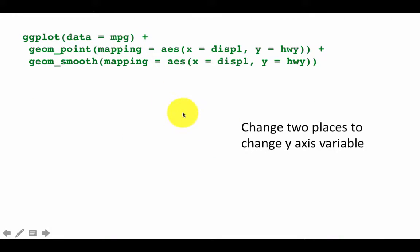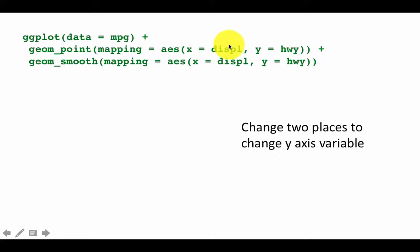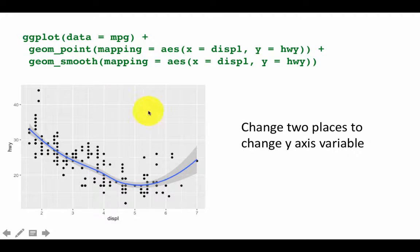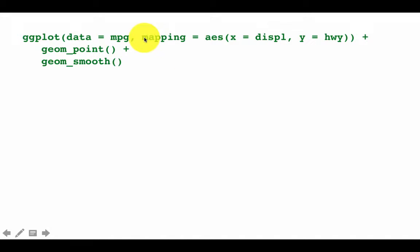Consider this graph: ggplot(data=mpg) + geom_point(x, y) + geom_smooth(x, y). We are using two geoms but the aesthetics are exactly the same for both. Now suppose we want to change the y-axis or x-axis variable — we have to make the change in two different places because it's being repeated. Whenever something like this happens, there is a tremendous amount of duplication. It's a good idea to move all of these into the main ggplot function, so we specify data and mapping aesthetics there, then simply say geom_point and geom_smooth.